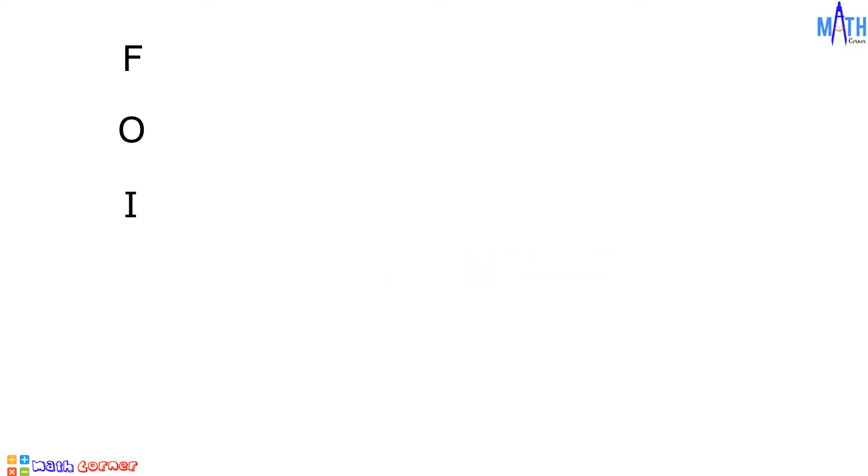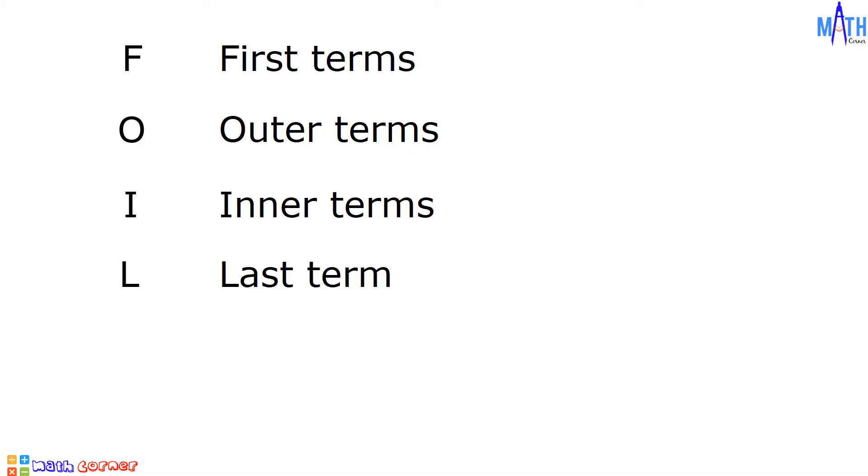The word FOIL is an acronym for the four terms of the product. F stands for the first terms, O for outer terms, I for inner terms, and L for the last terms.